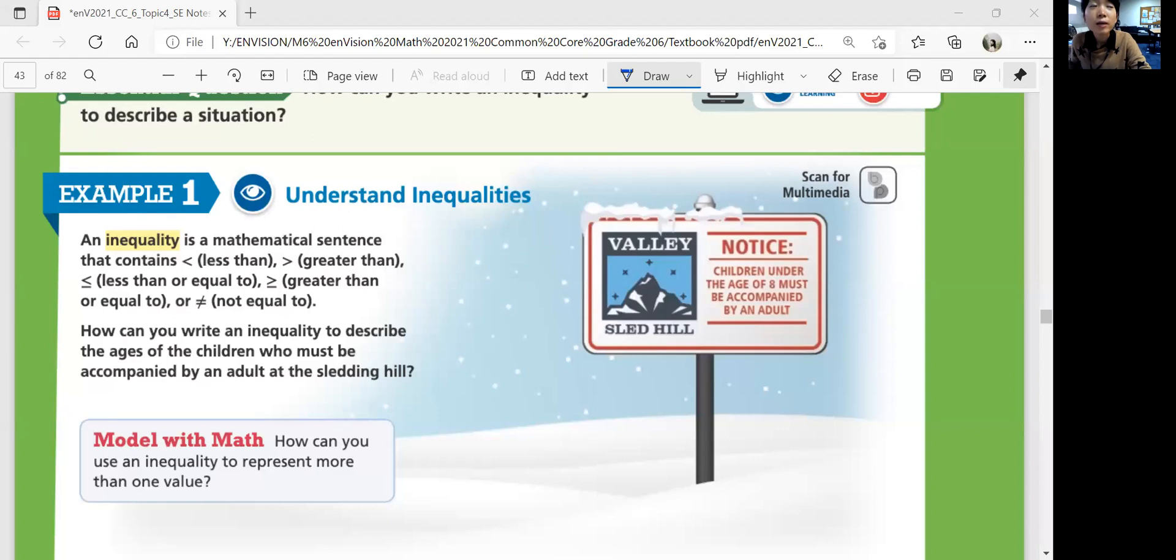So how can you write an inequality to describe the ages of the children who must be accompanied by an adult at the sledding hill? Okay? Notice children under the age of 8 must be accompanied by an adult. First of all, what ages are you asked to describe? The ages of children who must be accompanied by an adult at the beach water slide, which means ages that are under eight years.